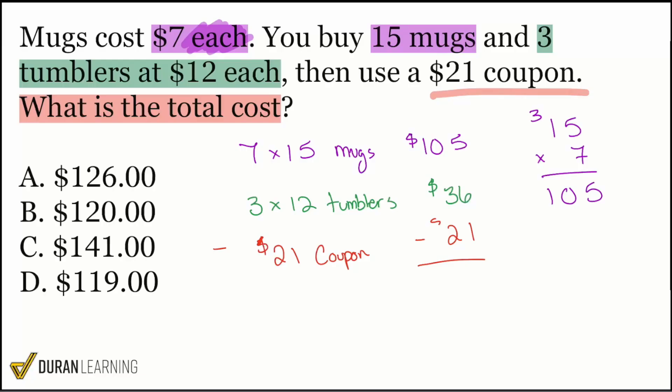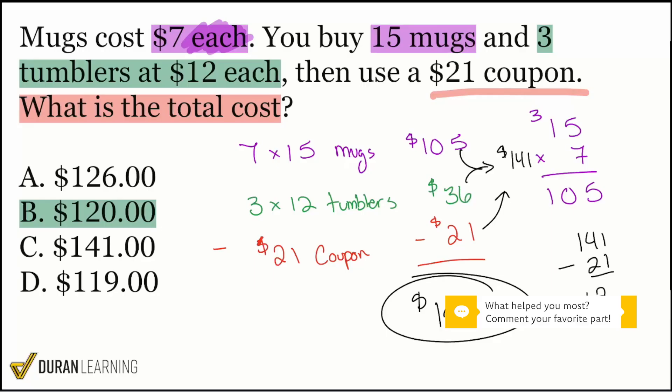You can go in that order: 105 plus 36 gives you 141, and then 141 subtract 21 brings us down to 120 as our final answer. That's how we get answer choice B. The cost we're paying at the end with the 21 dollar coupon applied brings that total cost down to 120. We were at 141 but when we take the coupon into account, 141 minus 21 gets us 120.